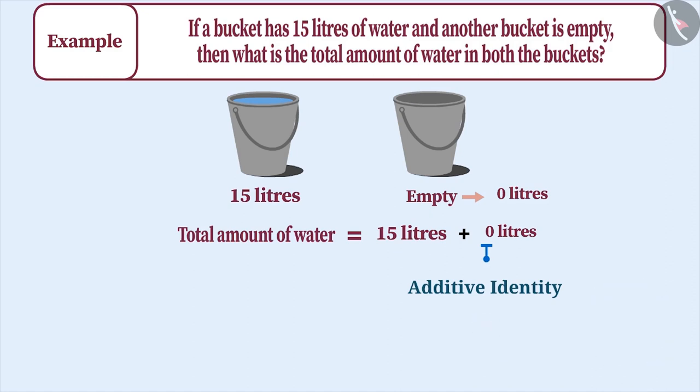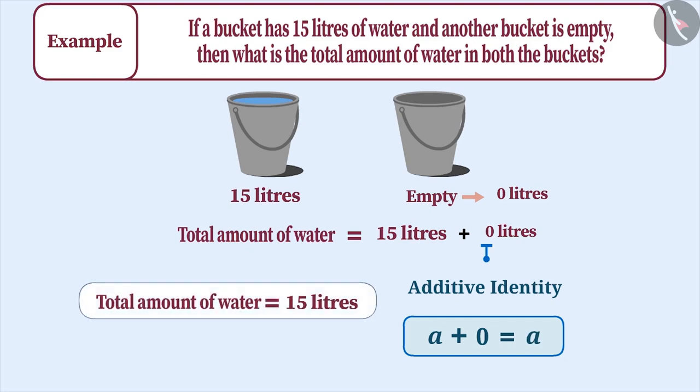Let me explain. This is because, if any number is added to 0, the result will be the same number. Therefore, the total amount of water is 15 litres.